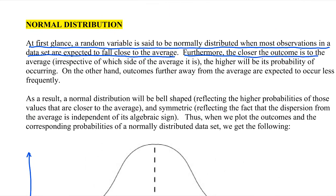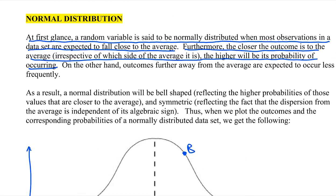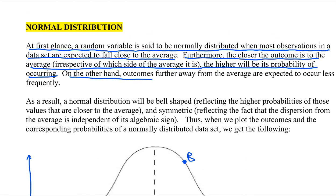So furthermore, the closer the outcome is to the average, irrespective of which side of the average you're looking at, the higher will be its probability of occurring. And that's exactly what we're saying here. So if you're looking at a number that's, if you're comparing A with B, well B is closer to the average, and therefore it's more likely to occur than outcome A. On the other hand, outcomes further away from the average are expected to occur less frequently. And we talked about that.